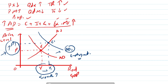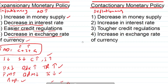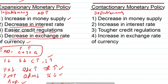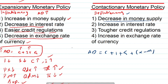Moving to contractionary monetary policy — also known as deflationary policy — it causes a decrease in aggregate demand and a decrease in demand-pull inflation. The central bank decreases money supply. When money supply is low, consumers have less money for spending and investors have less money for investment, so overall aggregate demand decreases. Aggregate demand is the sum of consumption + investment + government expenditure + (exports − imports).